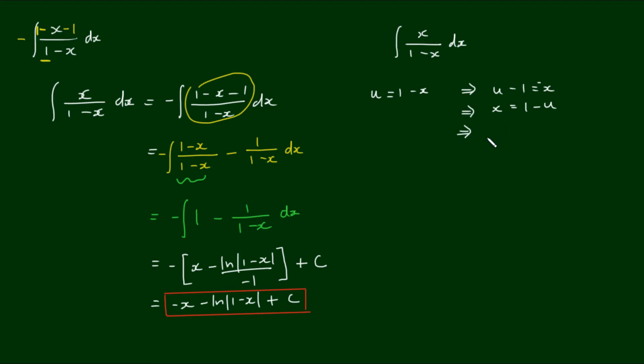And let's take the derivative of that. So we have dx equals the 1 differentiates to 0 and the negative u derives to negative du. So hence the integral of x over 1 minus x dx equals the integral, when we make the substitutions,